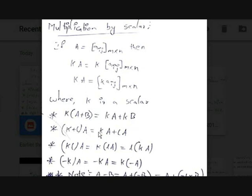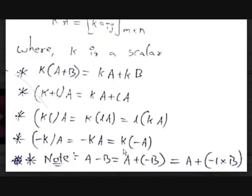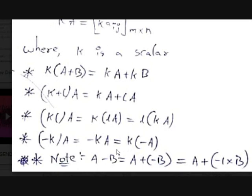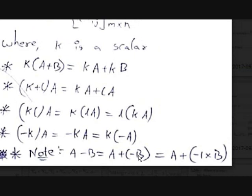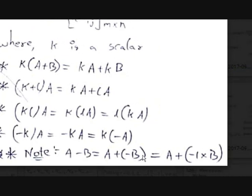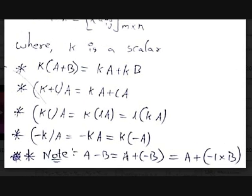And (K + L) times A equals K times A plus L times A, where K and L are two constants or scalars. The associative law also works: K times (LA) equals KL times A. And (−K) times A equals −(KA) equals K times (−A). An important note: if you want to subtract two matrices, meaning A minus B, you can write it as A plus (−B) or A plus (−1 times B) — multiply B by the scalar negative one and add the result to A.